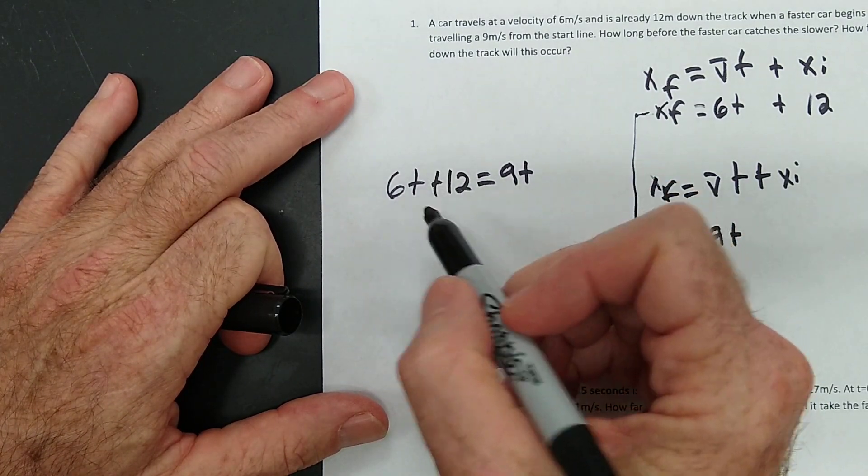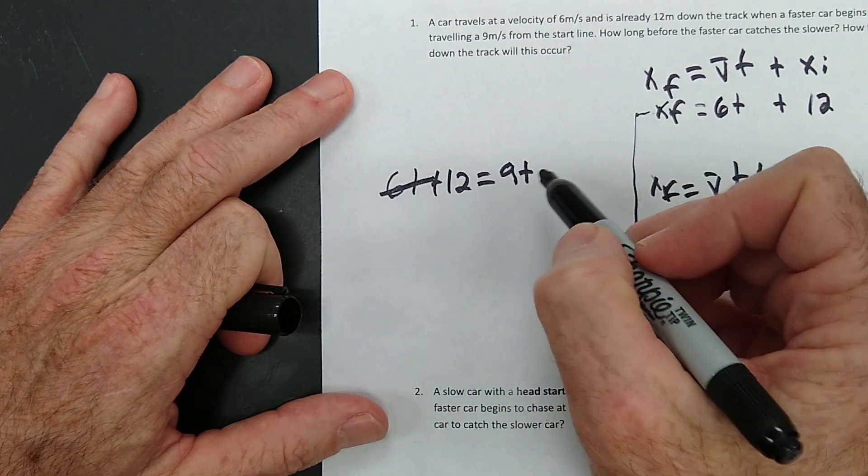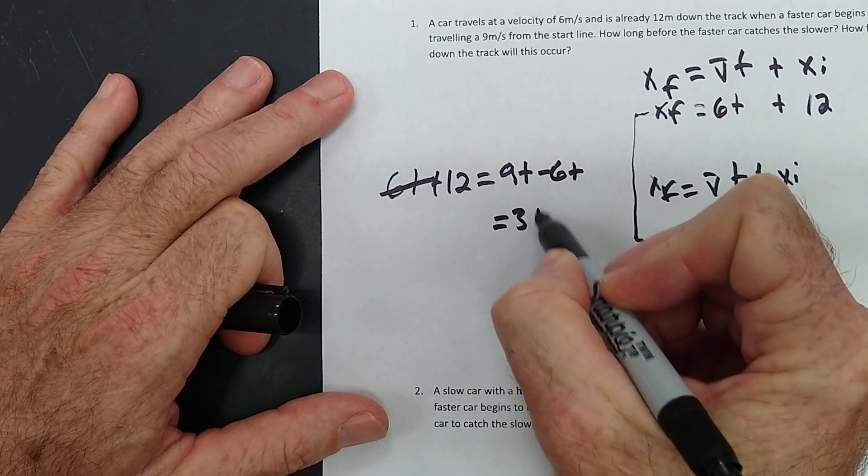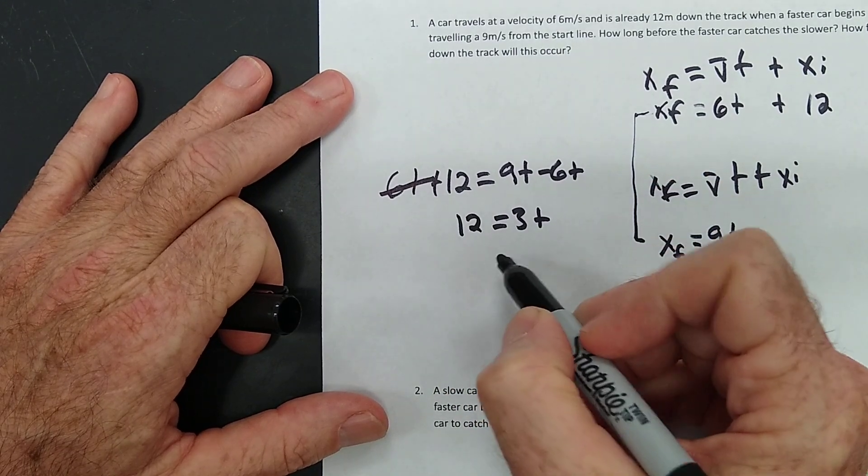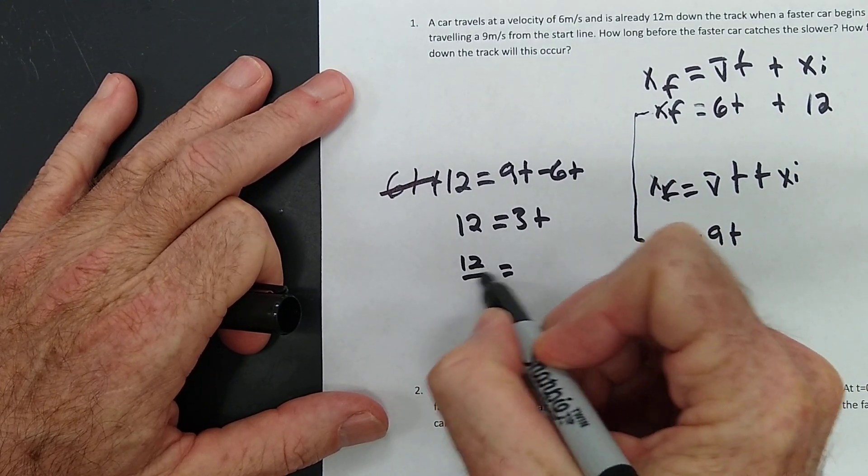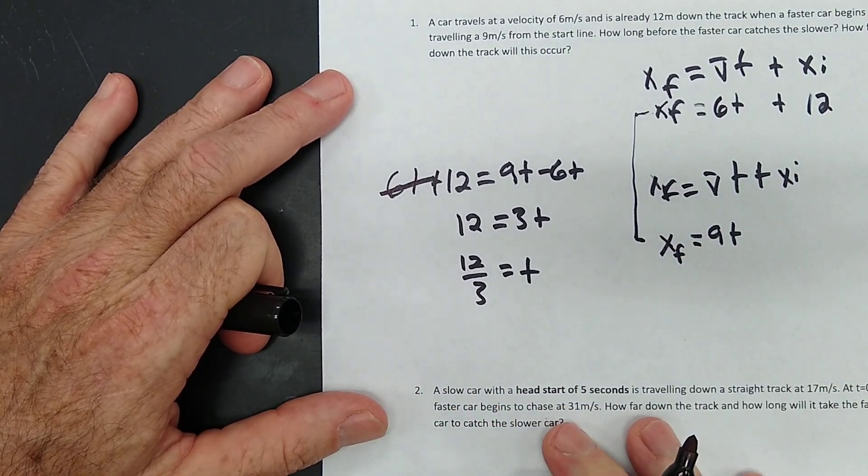And let me do some Algebra 1. 9T minus 6T, 3T is equal to 12. Very simply, this is going to take 4 seconds.